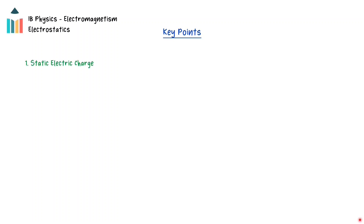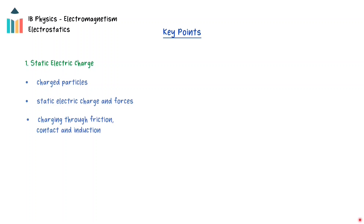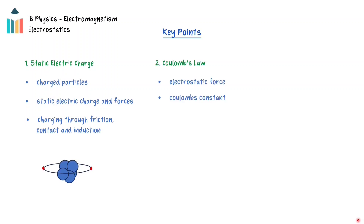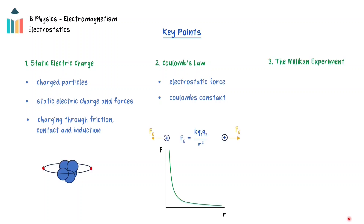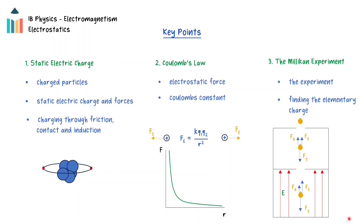In this video, the topic of electrostatics will be discussed. First, static electric charges will be explored, including the movement of charge and electrostatic forces. Charging objects through friction, contact, and induction will also be discussed. Secondly, Coulomb's law will be discussed, and the effect on Coulomb's constant k by other mediums will be explained. Finally, the Millikan oil drop experiment will be explained, and the discovery of the magnitude of the elementary charge explored.